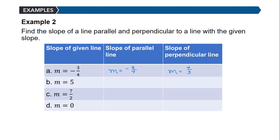If the slope is 5, the slope of a parallel line is also 5. The slope of a perpendicular line has the opposite sign (negative) and the reciprocal of 5, since 5 is 5/1, its reciprocal is 1/5. So the slope of a perpendicular line is negative 1/5.